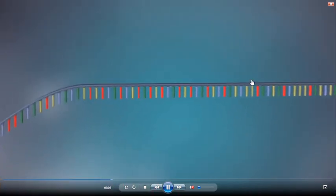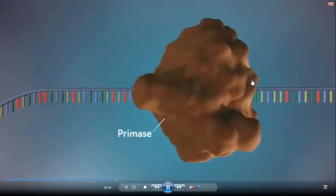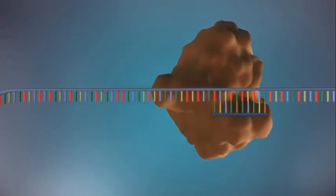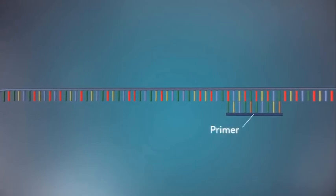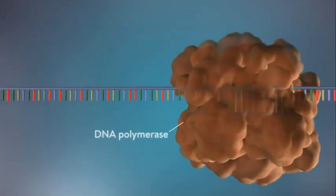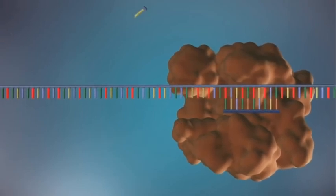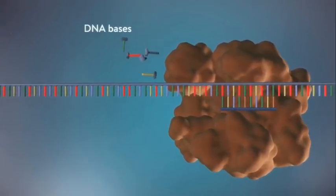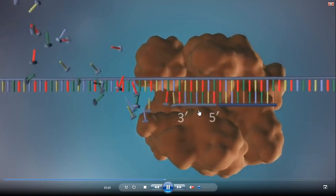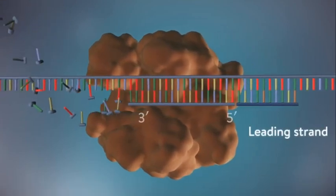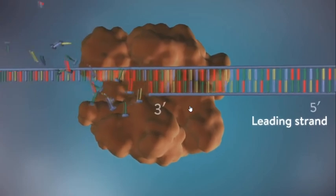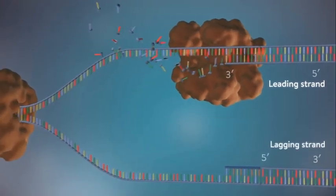Every DNA template acts as a model and new strands are synthesized. DNA Polymerase requires a primer made of RNA nucleotides. Primer provides the 3 prime end where DNA Polymerase enzyme adds free nucleotides. New DNA is synthesized in the 5 to 3 prime end direction. The strand that continuously elongates toward the replication fork is the leading strand.